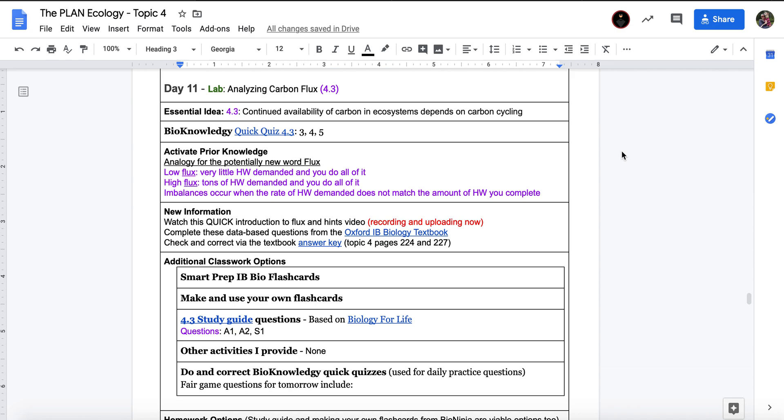Here for day 11, you're going to do this quote-unquote lab for analyzing carbon flux. We're going to practice some more database-style questions that the IB loves, where you have to use some data plus your knowledge of, in this case, ecology and carbon cycling in order to interpret and understand what's going on.